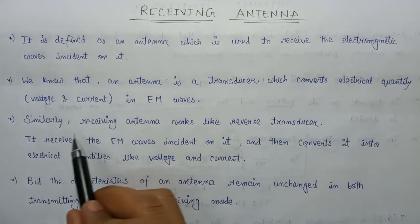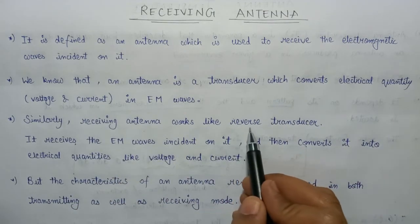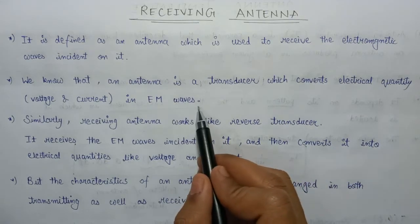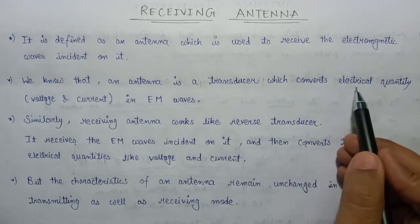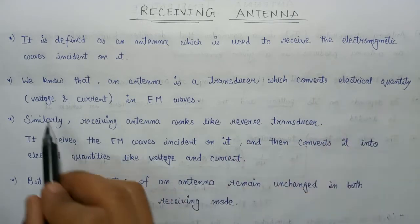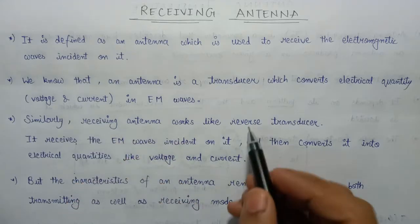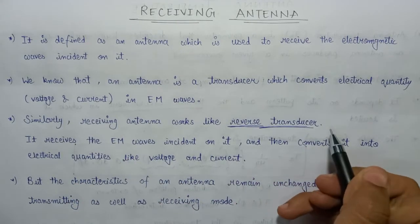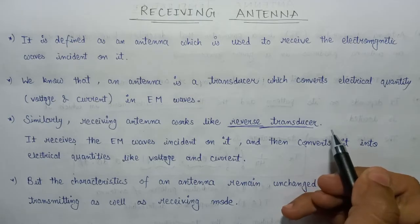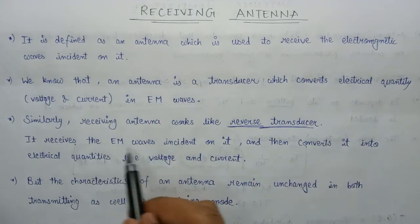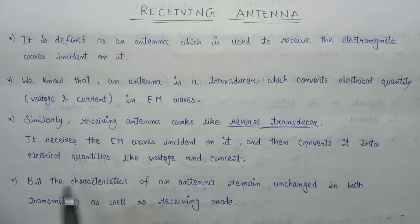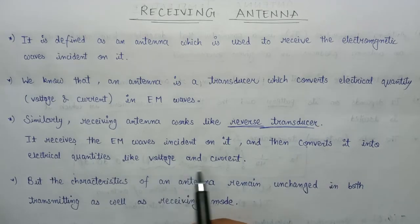The receiving antenna works like a reverse transducer. Since the transmitting antenna works like a transducer and generates electromagnetic waves from electrical quantities, the receiving antenna on the other hand takes the electromagnetic wave incident on it and converts it into electrical quantities — that is voltage or current. This is all about the reverse transducer, or we can say, the receiving antenna.